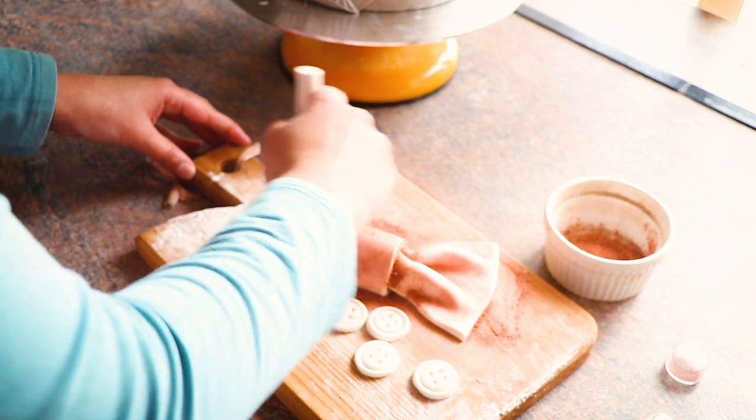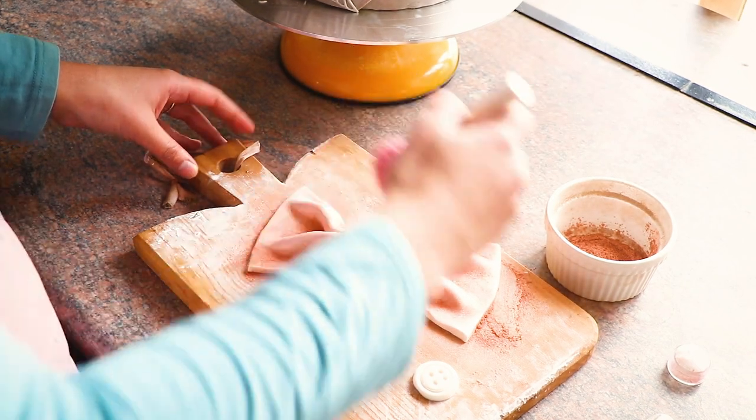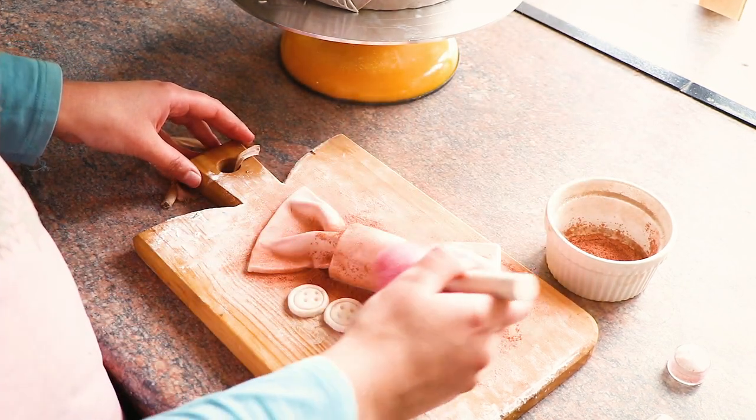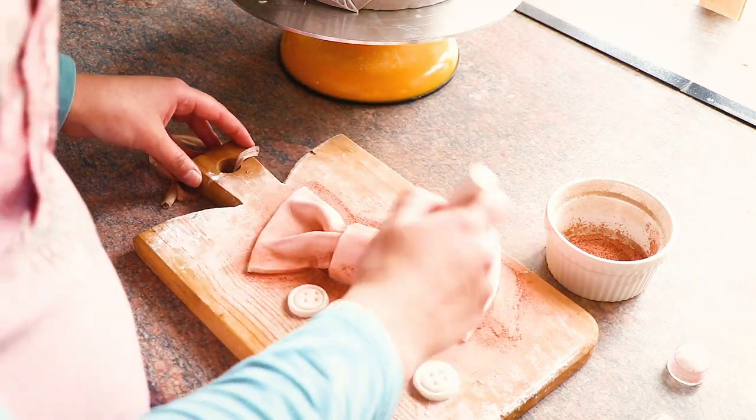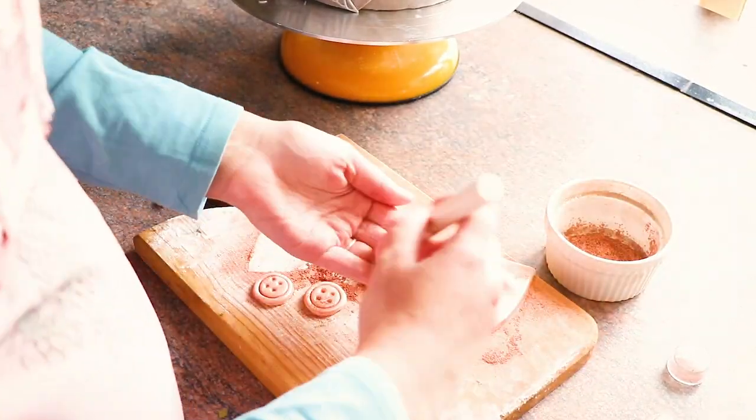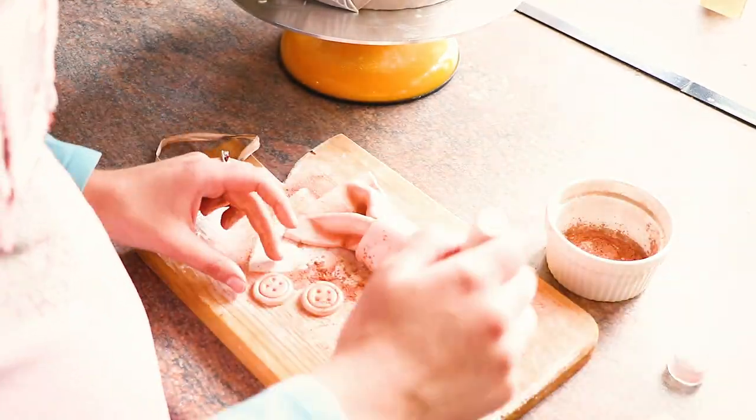The next day I dusted my bow tie and buttons with rose gold metallics to give them a shiny look. I attached my bow tie and stuck down the button and my cake was finished.